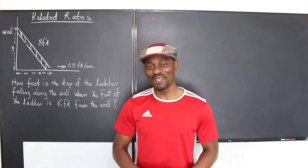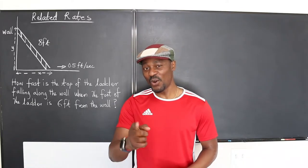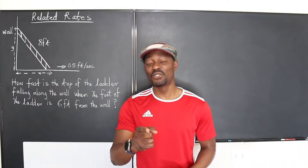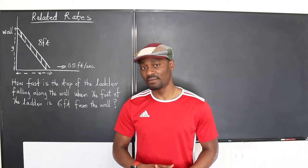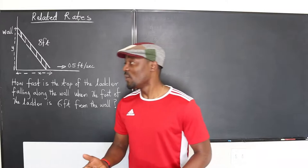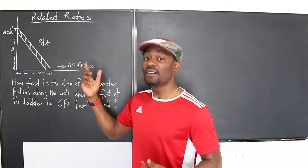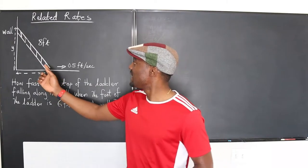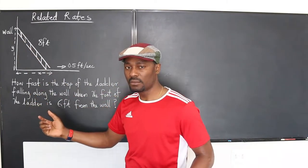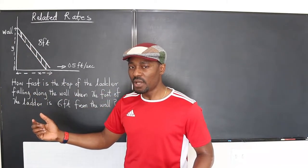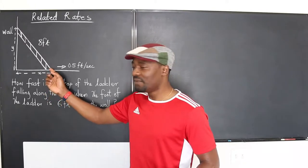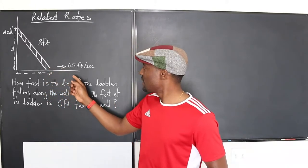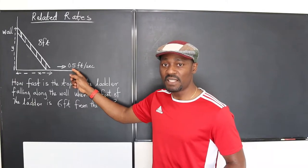Hello and welcome to another video. We're going on a mission today with the story of little Johnny. Little Johnny was using an eight-foot ladder to work at home and he placed the ladder against the wall, but while he was working, the foot of the ladder slipped at 0.5 feet per second.